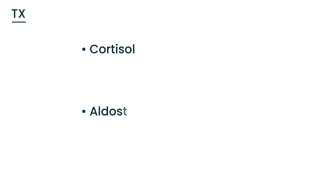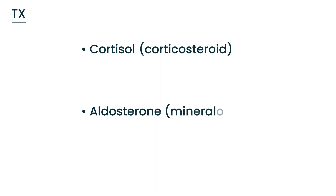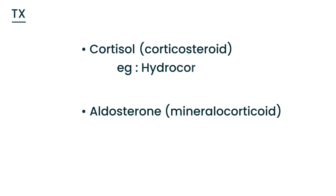Treatment of CAH essentially involves replacing the two vital hormones not produced in adequate amounts: cortisol and aldosterone. Cortisol is a corticosteroid, and aldosterone is known as a mineralocorticoid. The medications most commonly given are hydrocortisone for corticosteroid replacement, and fludrocortisone for mineralocorticoid replacement.